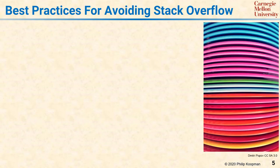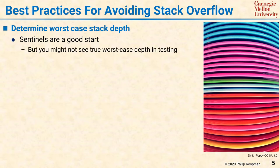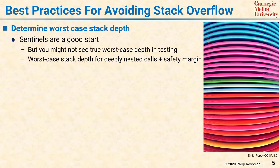Here are some best practices for ensuring that stack overflow is not a problem in your system. First, determine the worst case stack depth. Using sentinels during program testing is a good start and will probably tell you if you have huge problems. But it is very difficult to observe the true worst case combination of subroutine calls, nested with operating system calls, nested with interrupt service routines, and their effect on stack depth during testing.